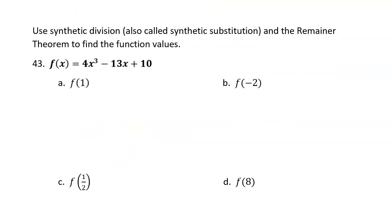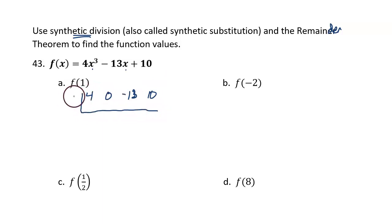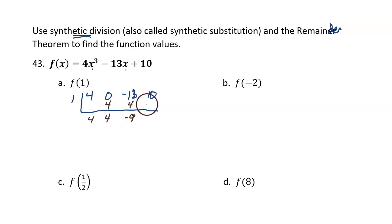Next question: use synthetic division and the remainder theorem to find the function values. We want to find f of 1. List the coefficients: 4, 0, negative 13, and 10. Make the bracket and divide in a 1. Run through: 4, 4, 4, 4, negative 9, negative 9, and 1. The remainder is 1, therefore f of 1 equals 1.